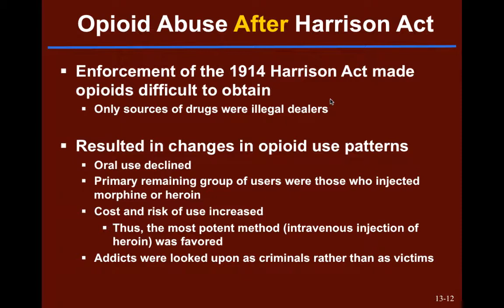The result of the Harrison Act was that opioid use patterns changed. Oral use through patent medications declined, and the primary shift may have moved to alcohol. What was left was a group of users who either injected morphine or heroin. This increased both the cost and the risk of use — far more danger in consuming these methods, as they were more potent and more toxic. As both cost and risk increased, people tended to favor the most potent methods — the most bang for the buck. And we saw this shift where people dependent on opioids were now seen as criminals rather than victims.